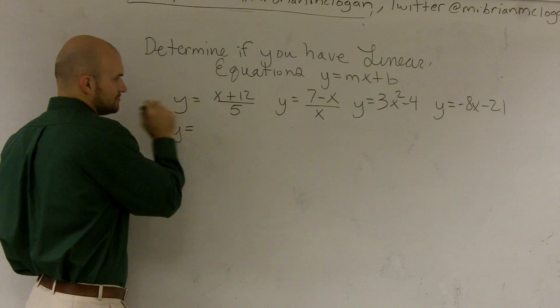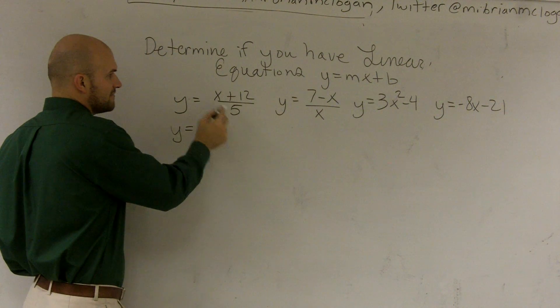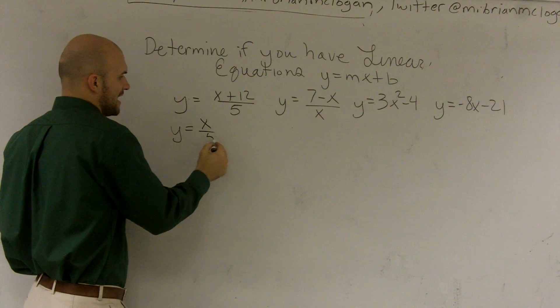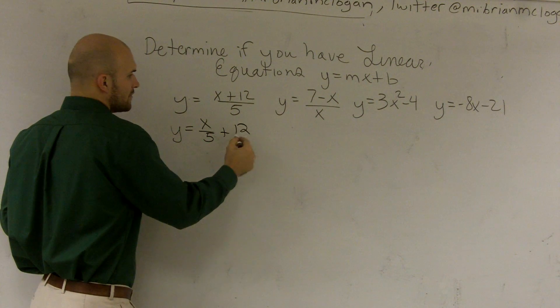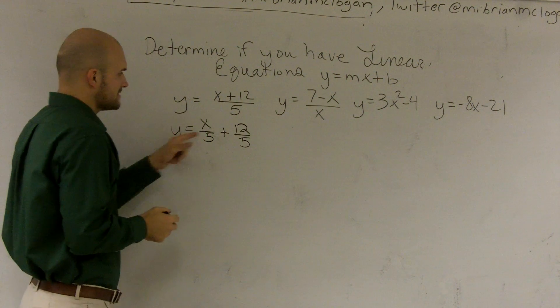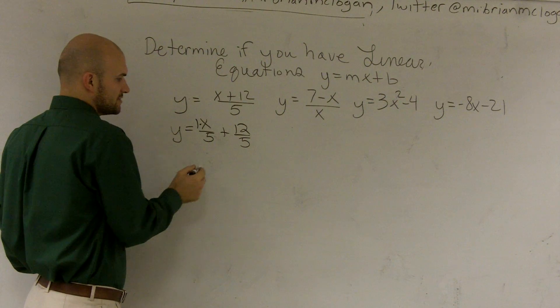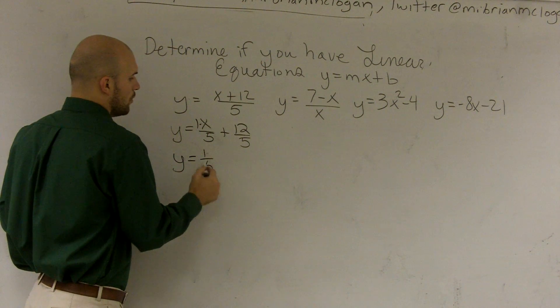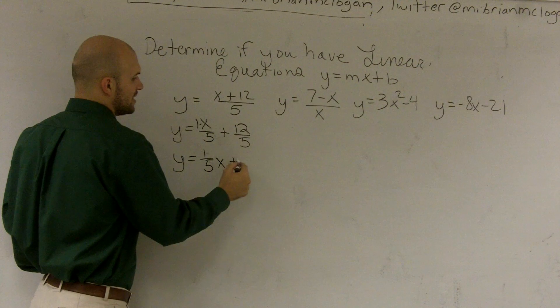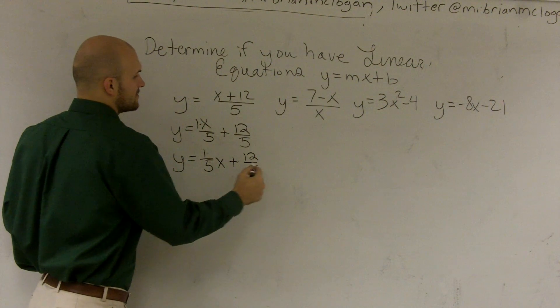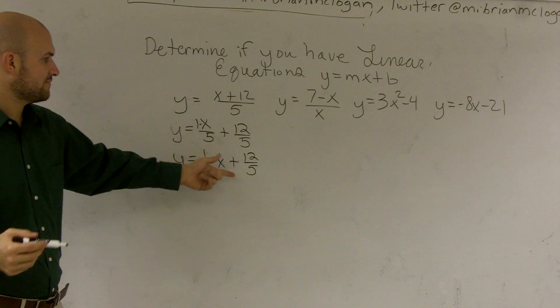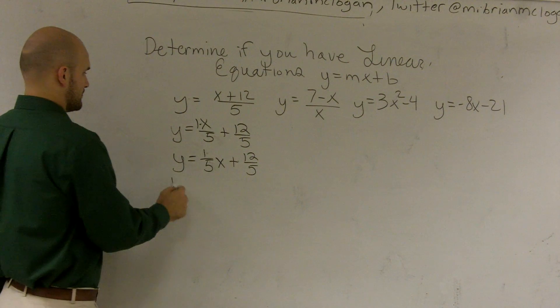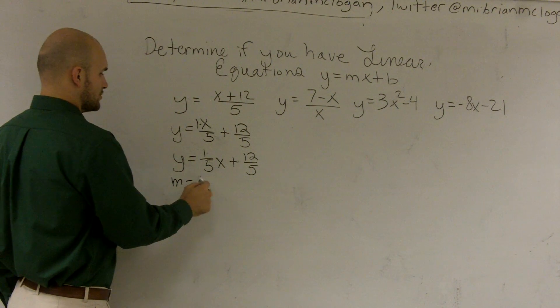If you were to look at this and divide your 5 into x, you would have x over 5 plus 12 over 5. And remember, this x has a 1 in front of it, right? So we can write this as y equals 1 fifth x plus 12 over 5. So here, my b is going to be 12 fifths and my m is equal to 1 fifth.